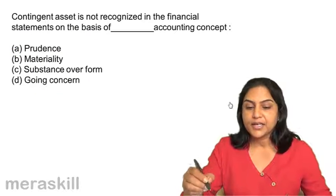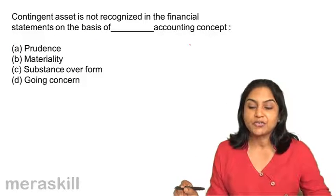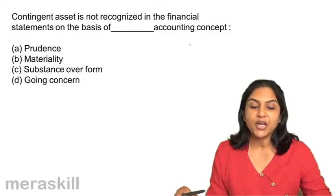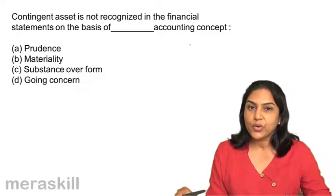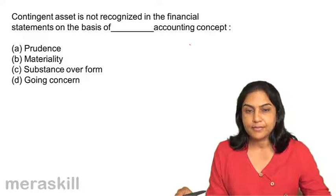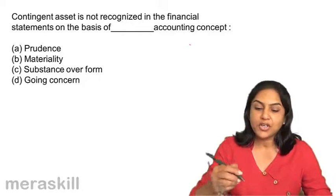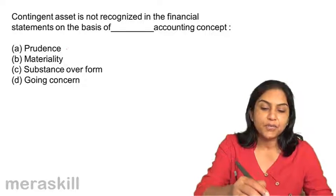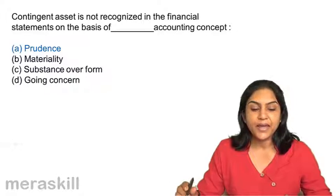Next, contingent asset is not recognized in the financial statements on the basis of the dash accounting concept: A. prudence, B. materiality, C. substance over form, and D. going concern. A contingent asset is not recognized on the basis of the concept of prudence, or conservatism. Correct answer should be A.